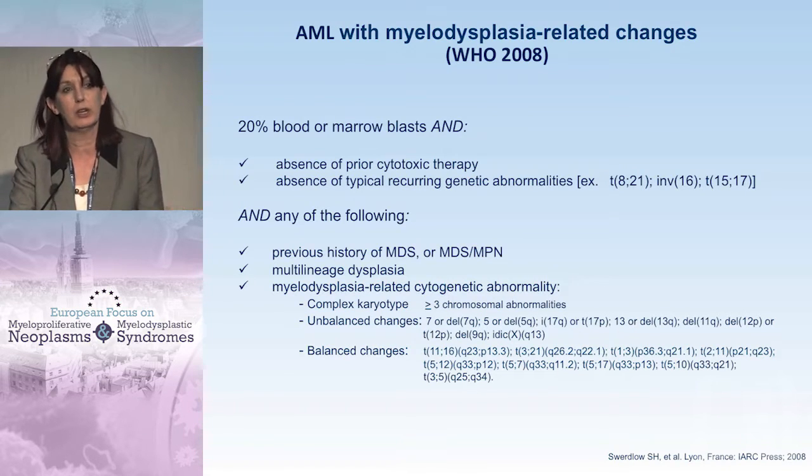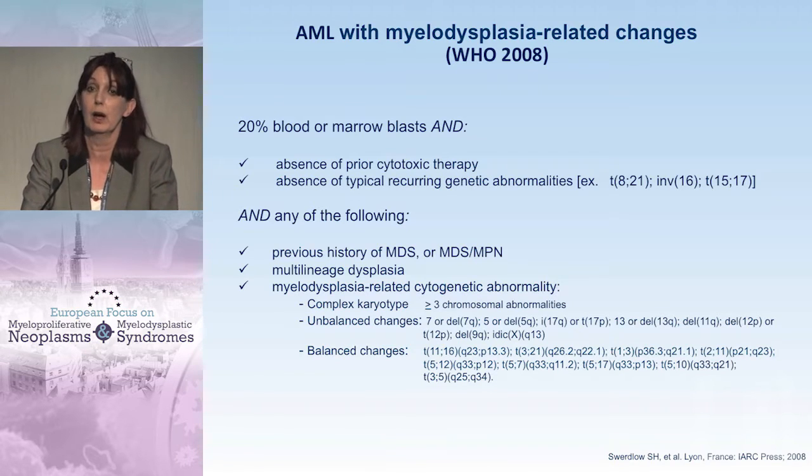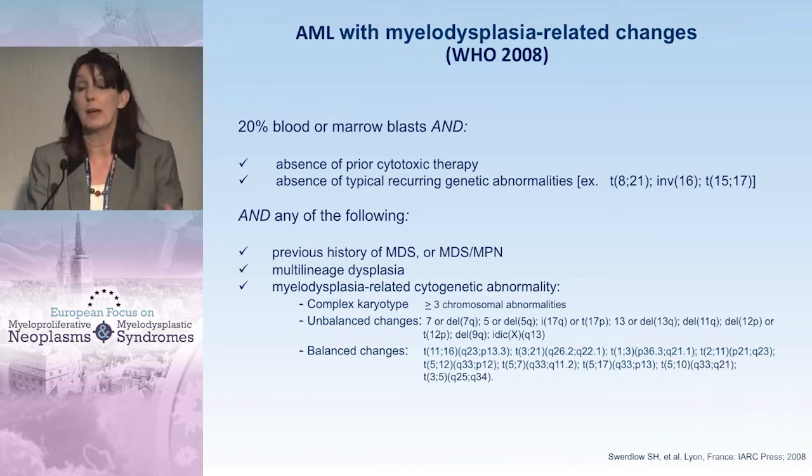Here we do not only include patients with a previous history of MDS, but also those patients with a so-called de novo AML who have myelodysplastic lineage, and also patients who have chromosomal abnormalities which we very frequently see in patients with MDS — the complex karyotype, for example, or many unbalanced abnormalities, especially of chromosome 5 and 7, as well as many balanced changes.